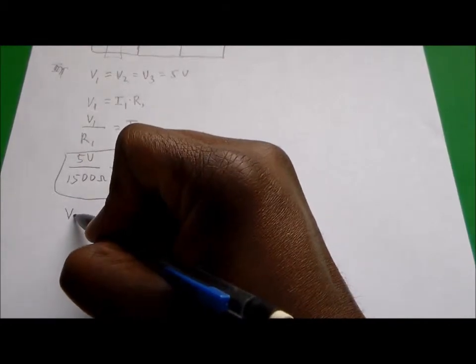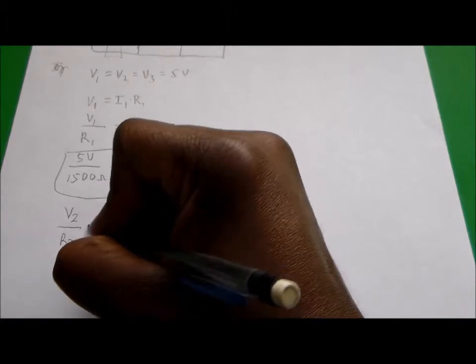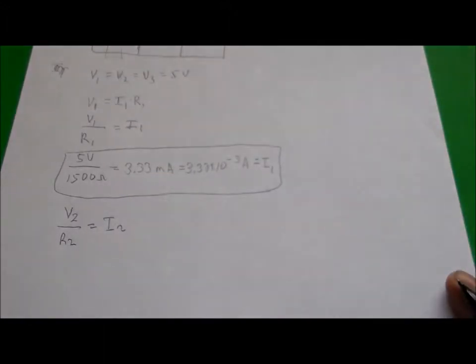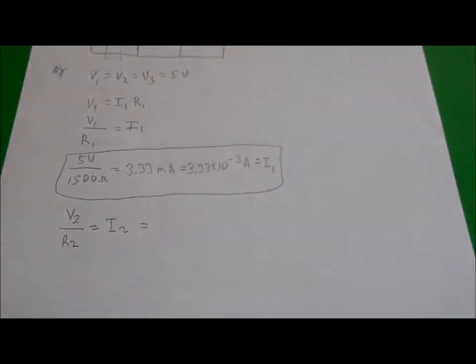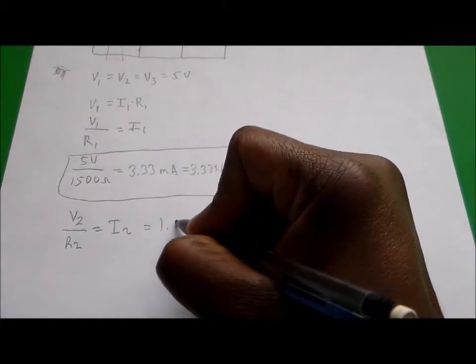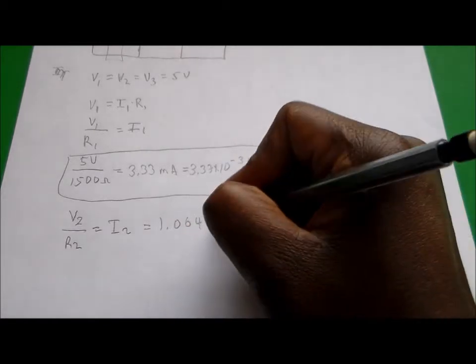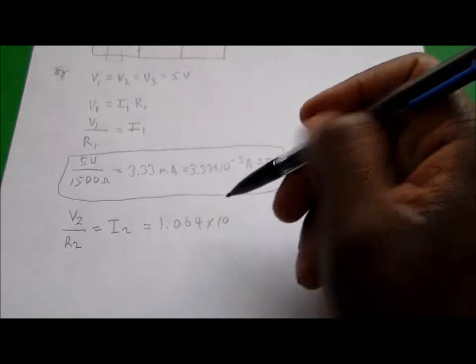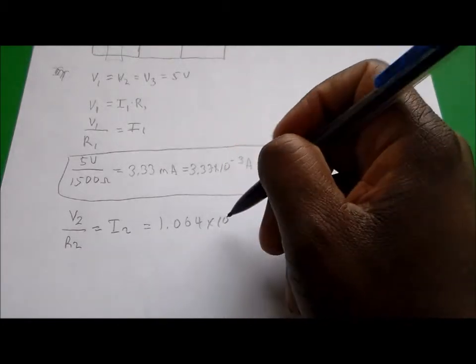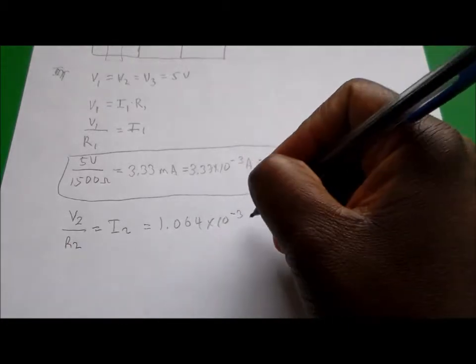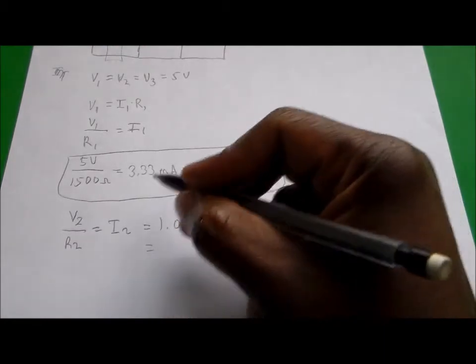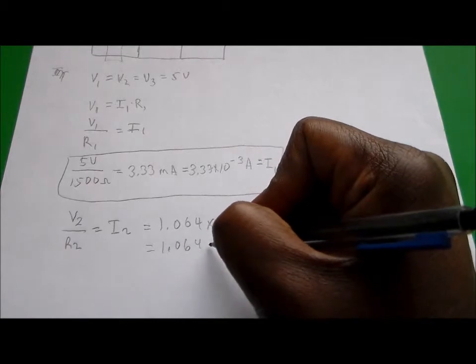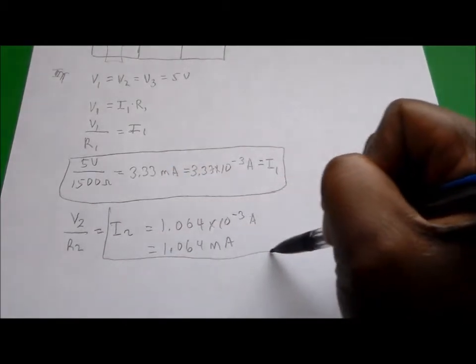For resistor number two, I2 equals V2 divided by R2. We know that V2 is 5 volts, so we have 5 volts divided by 4700. That gives us a current of 1.064 times 10 to the negative 3 amps, which is the same thing as 1.064 milliamps.